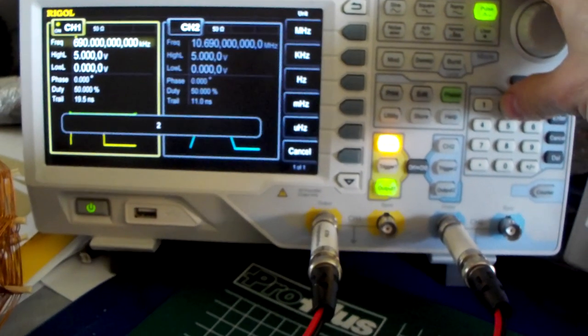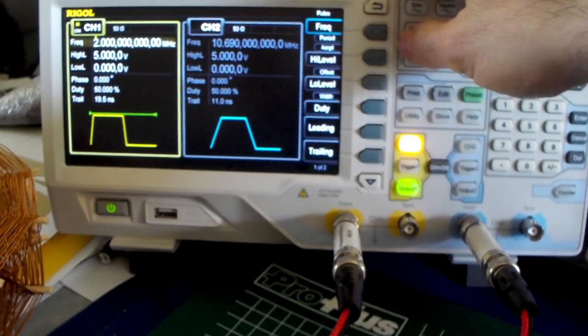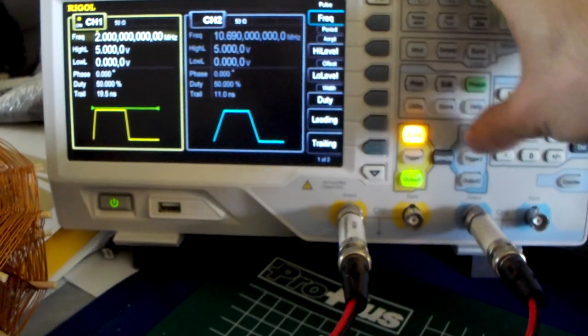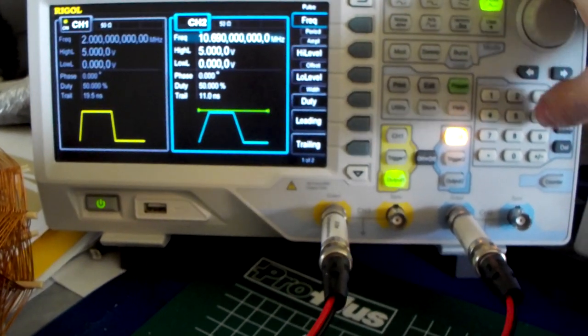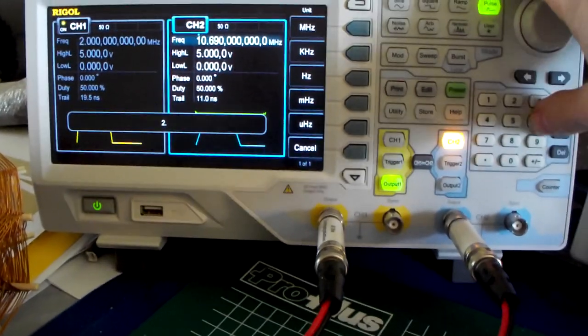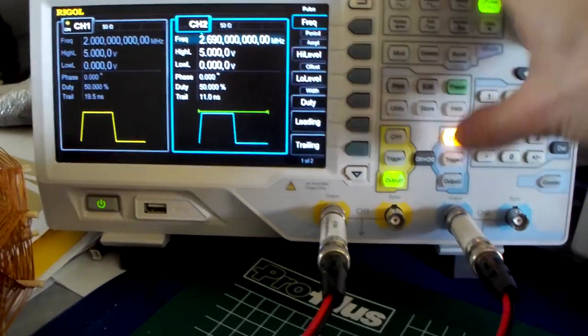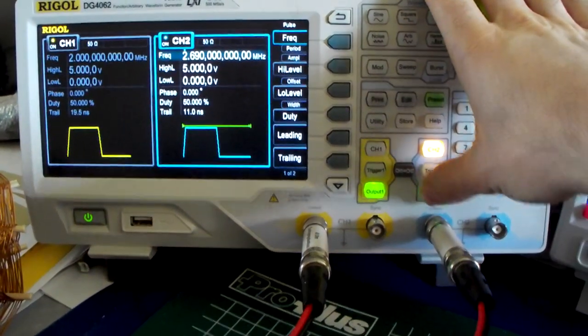I'm also going to put out channel 2. I'm going to start first with giving 2 megahertz at channel 1, and we go to channel 2 and we set that to 2.69 megahertz, and we put it on the output.